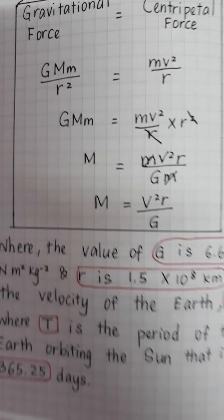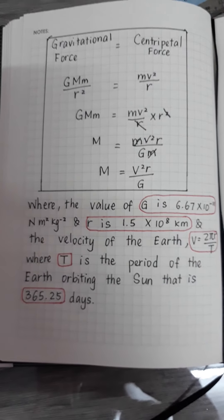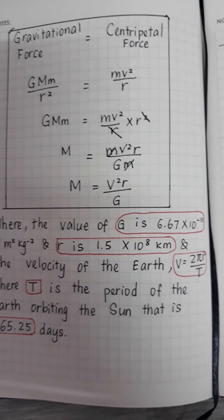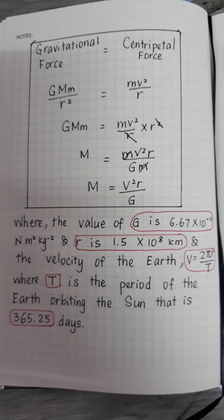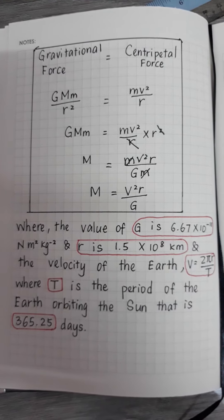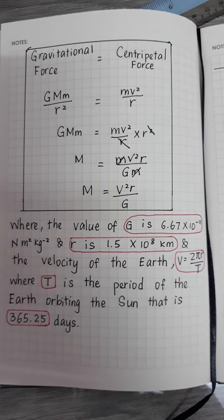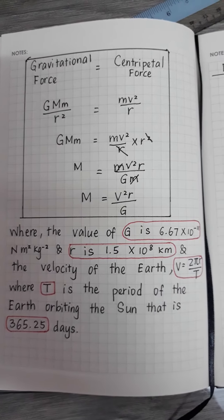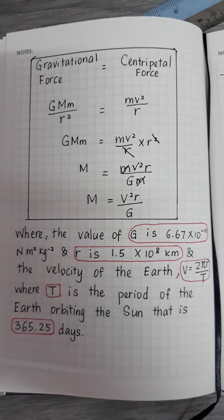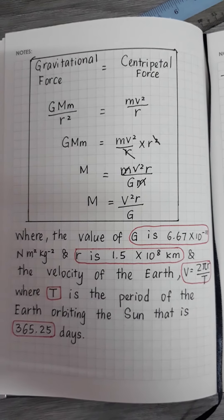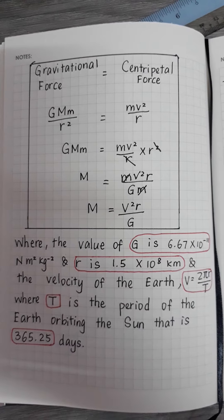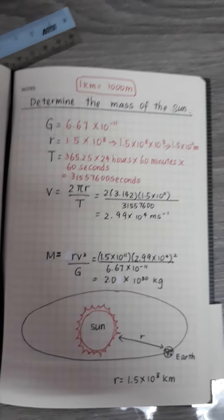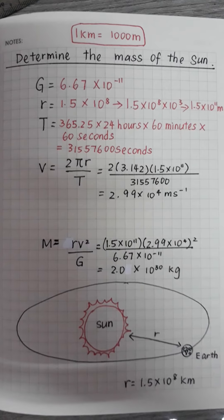Now look at the question where the value of G is 6.67 times 10 power of negative 11 Newton meter square per kilogram square. R is 1.5 times 10 power of 8 kilometers and the velocity of the earth is v equal to 2 pi r over T, where T is the period of the earth orbiting the sun that is 365.25 days. So now we put in all the information.